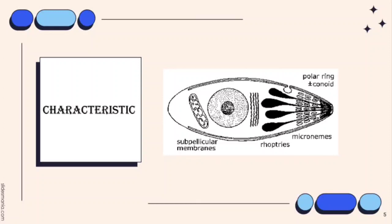The apical organelles play a role in interactions of the parasite with the host cell and the subsequent invasion of the host cell. Most forms of Apicomplexa crawl along the substratum in a non-amoeboid fashion known as gliding motility. Many apicomplexan species have flagellated gametes.